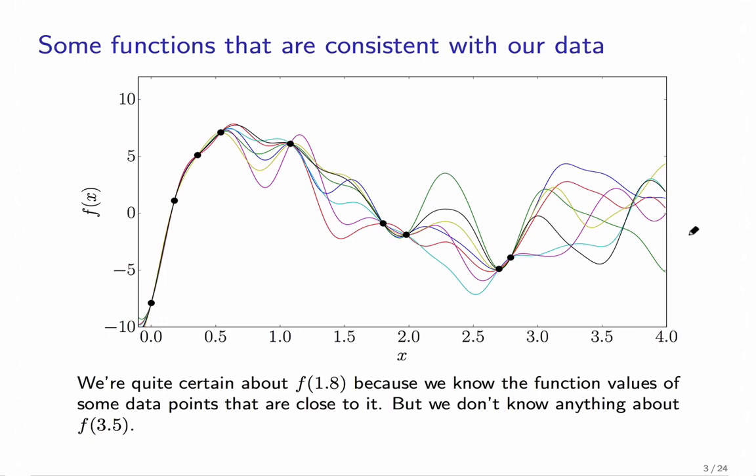So if we interpret a function as essentially a very long vector of values, then we can use our Gaussian distributions over vectors to model a distribution over functions. And in this picture, you see the result of such a distribution. We have our data from before and 10 draws from a Gaussian process.